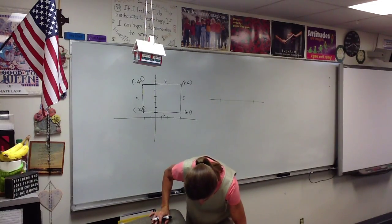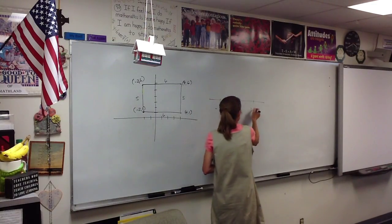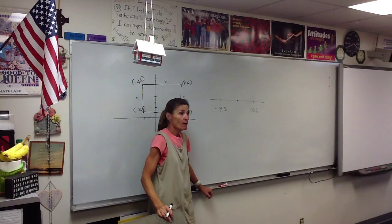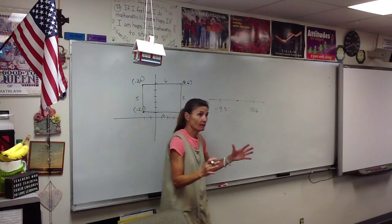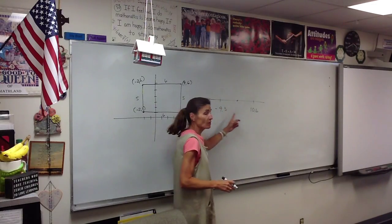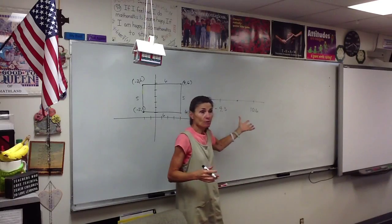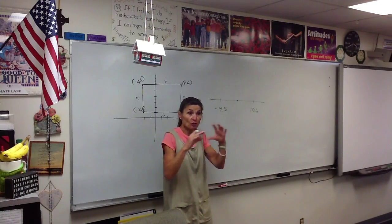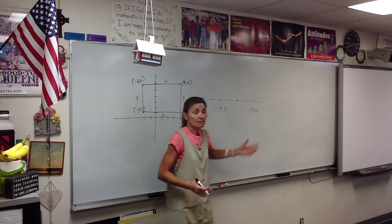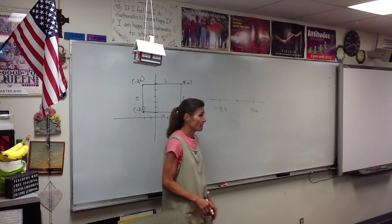We want to be at negative 9.3 and 10.6, and we want to know what's right in the middle of those two points. How do we always find the middle of anything? It's an average. So you're just going to add those and divide by 2. In this case it's just on the number line, so this is like just having the x's. What's the midpoint? Average — just add and then divide by 2.